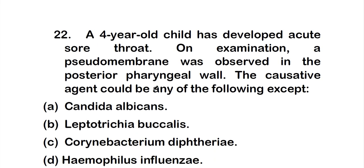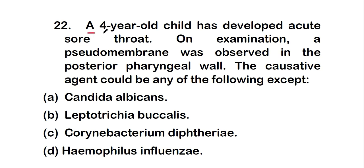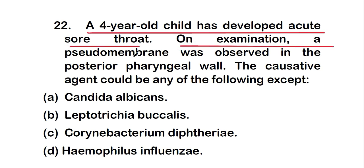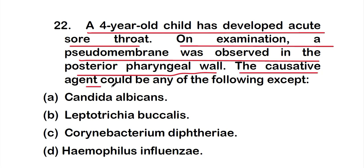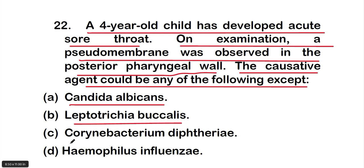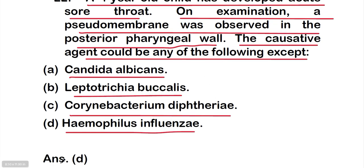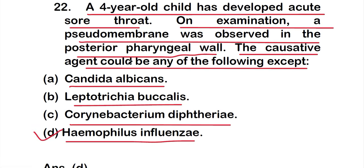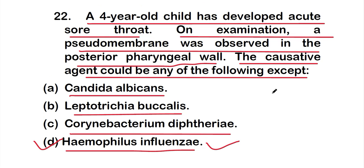Question 22: A four-year-old child has developed acute sore throat. On examination, a pseudomembrane was observed in the posterior pharyngeal wall. The causative agent could be any of the following EXCEPT — option A: Candida albicans, option B: Leptotrichia buccalis, option C: Corynebacterium diphtheriae, or option D: Haemophilus influenzae. The right answer is option D, Haemophilus influenzae.